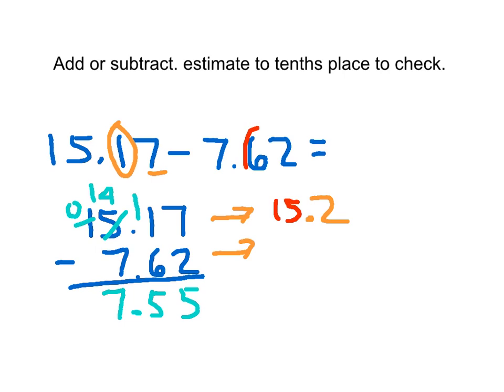Now I do the same thing with my other part of the problem. 7.62 to the nearest tenths is 7.6, and this is my estimate. 12 minus 6 is 6, and 14 minus 7 is 7, and my decimal point comes straight down. Now I look at the two answers and see if they're relatively close, and they are. This is the exact answer that I'm circling and this is the estimated answer for this subtraction problem.